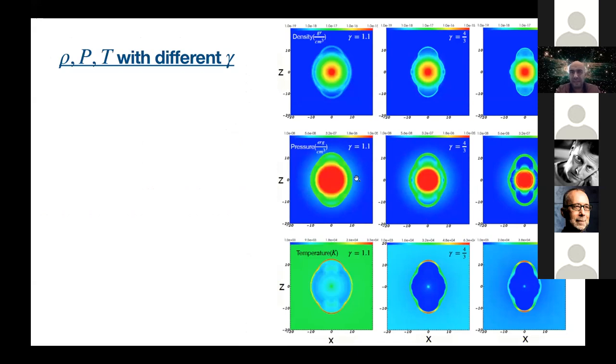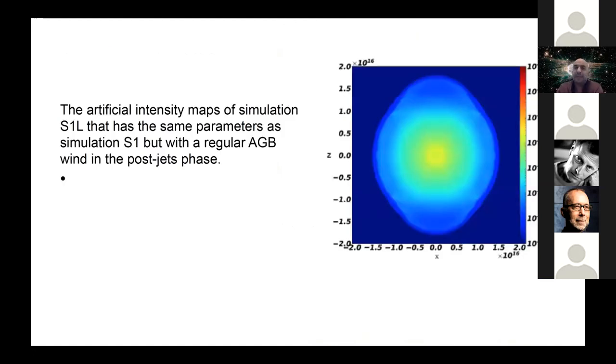Here for example, I show the density, pressure, and temperature for different values of the adiabatic index. The density of the gas is actually high, so we don't have radiative cooling. We rather use different values of the adiabatic index. We start from 1.1, four-thirds, and five-thirds. We see here, for example, the pressure and the temperature, and we can easily see that the higher the value of the adiabatic index, the higher the value of the temperature of the post-shock jet gas. Here we simulate a case in which we don't have the dense wind. We rather use the regular wind, and we still have some nice ear also, as we see here and here.